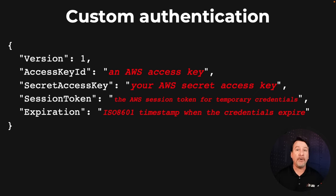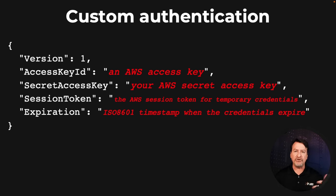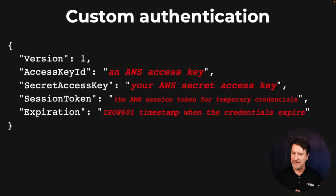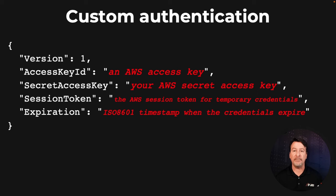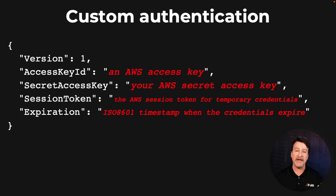So whatever the process may be — whether you're running out to Active Directory, maybe you're checking some other directory source that AWS doesn't give you an easy way to use, like in an SSO-type format — you can use this particular approach to create a custom authentication method to the AWS CLI.